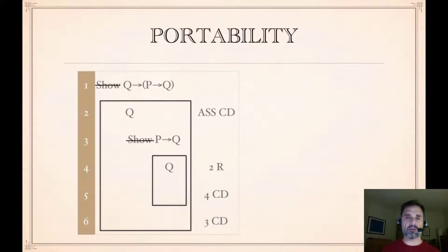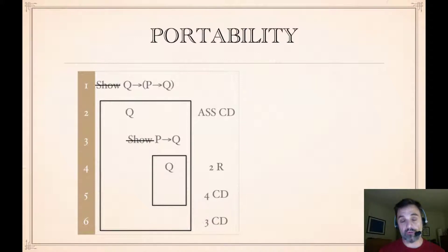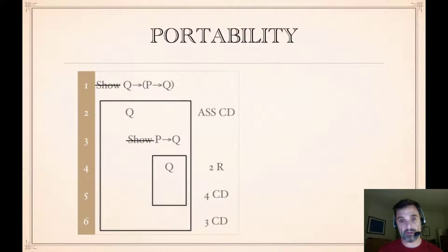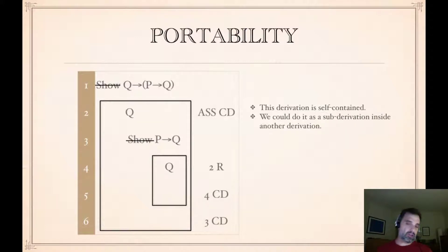Now I'm going to talk about a number of features that theorems have, building up to an important one. We'll start with the fact that their derivations are portable. Let's look at this derivation of 'if Q, then if P then Q.' We start by saying: show if Q, then if P then Q. Line 2, we assume the antecedent Q. Line 3, we say show if P then Q. Line 4, we repeat line 2, which is Q. Q is the consequent of line 3, so we say 4CD, which lets us box and cancel line 3. Having line 3 boxed and canceled, we cite it for CD, boxing and canceling line 1, because line 3 is the consequent of line 1. This derivation is self-contained — you could do it as a sub-derivation inside any other derivation.